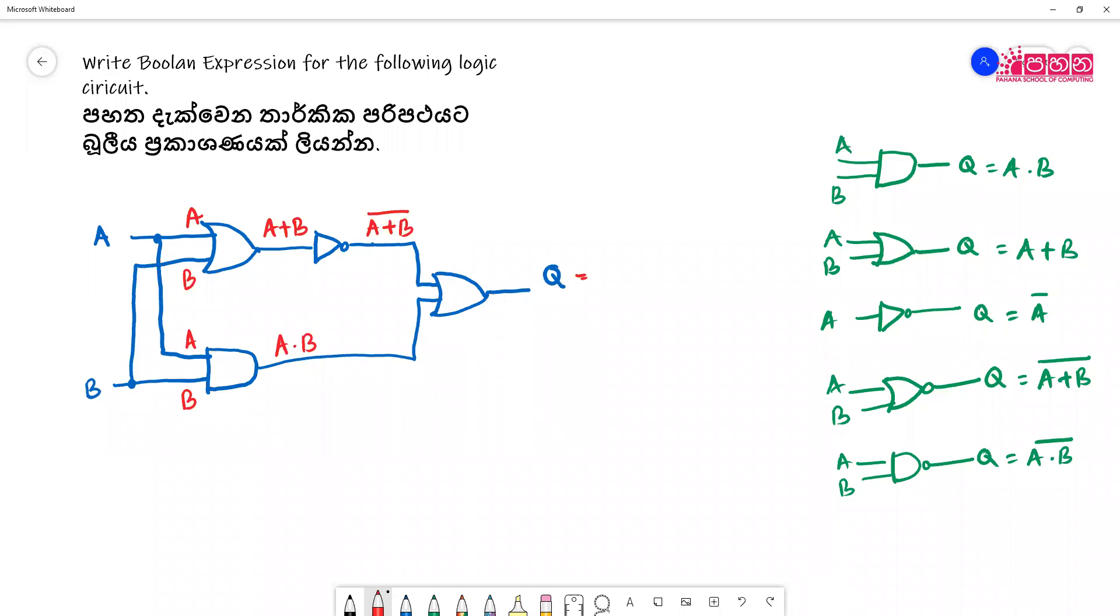Getting A plus B bar, output Q. A plus B bar plus A dot B. So we have A plus B bar. Boolean expression, plus getting A dot B.